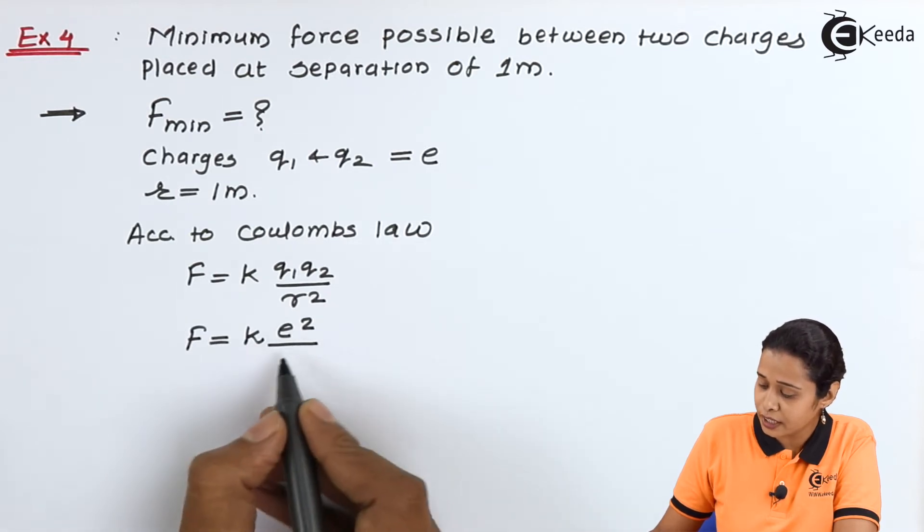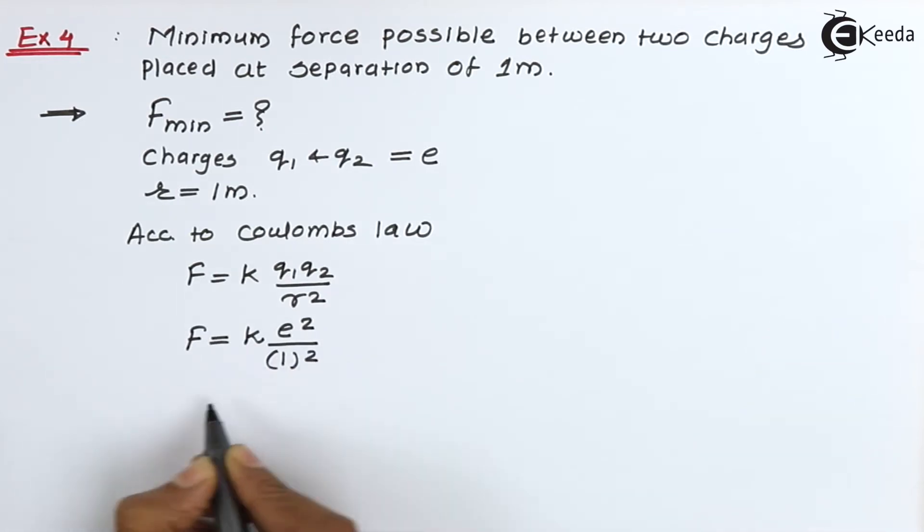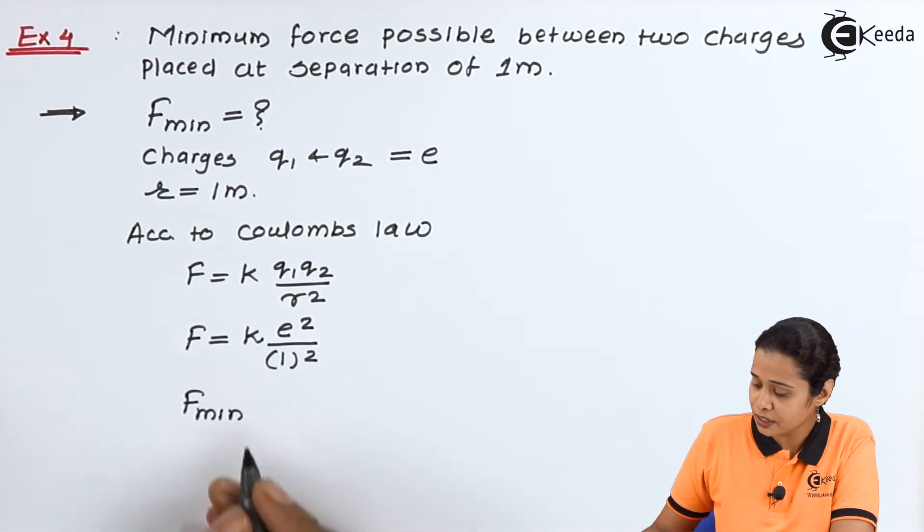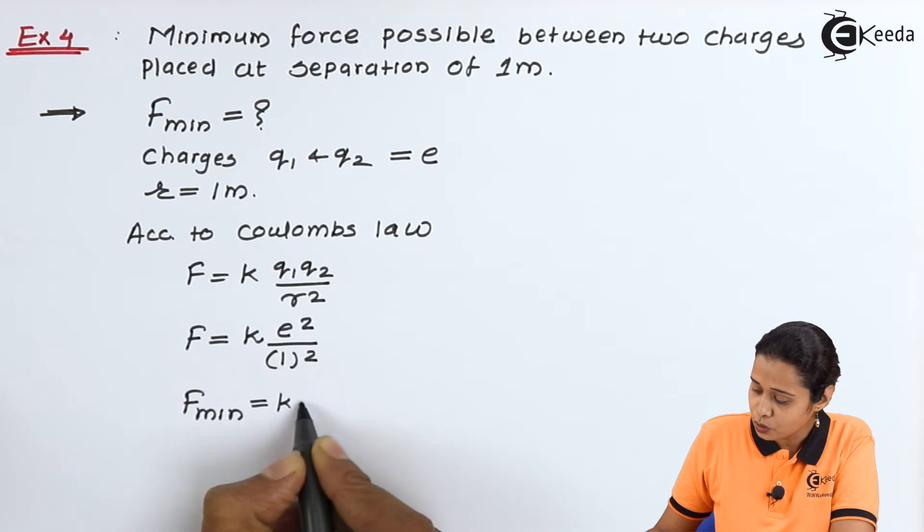Since the value of R is 1, the minimum force between these two charges equals K times e square.